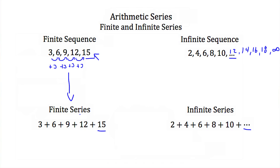The same thing happens with an infinite series. We have 2, and then we add 4, and then we add 6, and then we add 8, and then we add 10, and then we would be adding 12, and then 14, and so on until we were adding to infinity. So a finite series is one with a final term, and an infinite series is one that continually goes on forever.